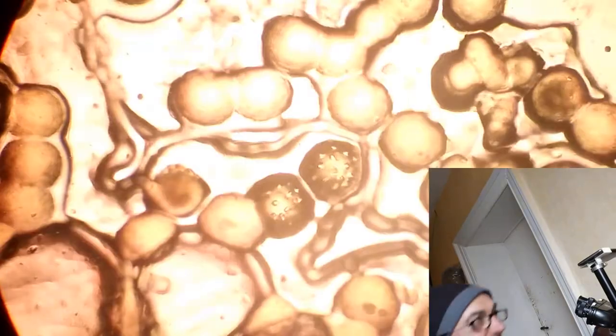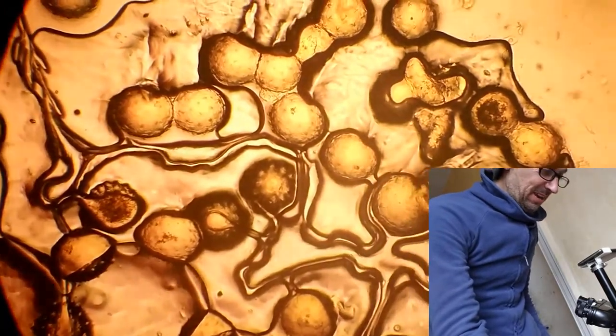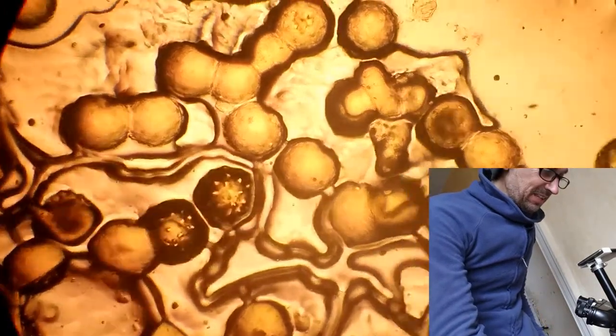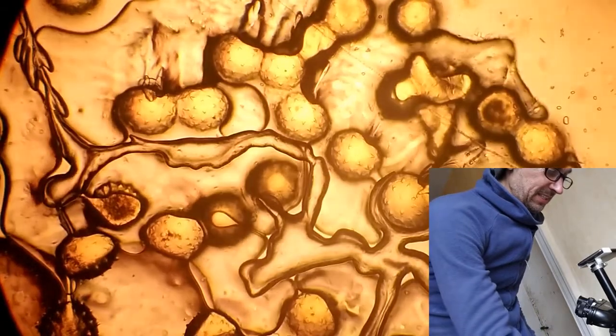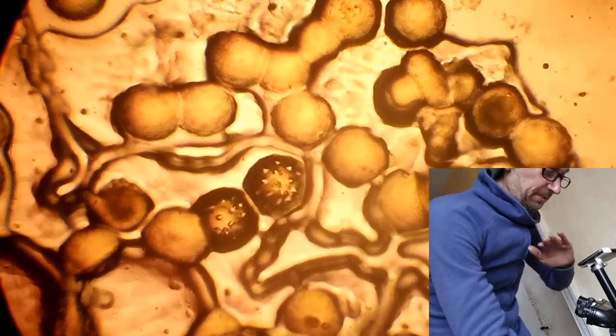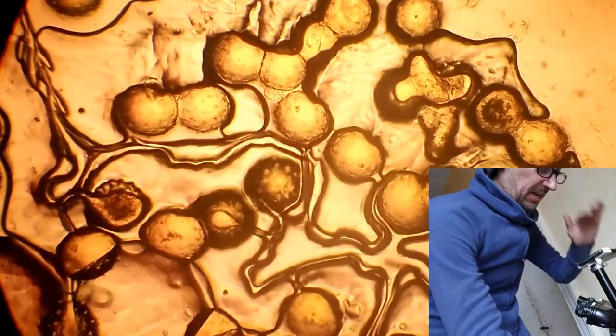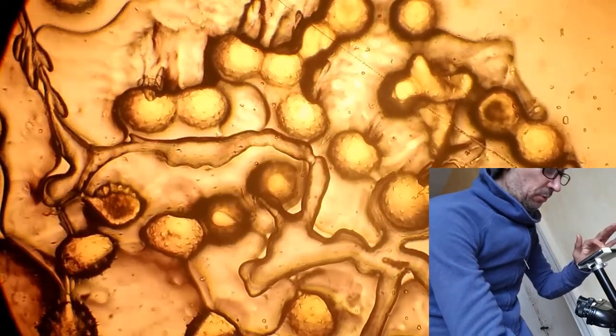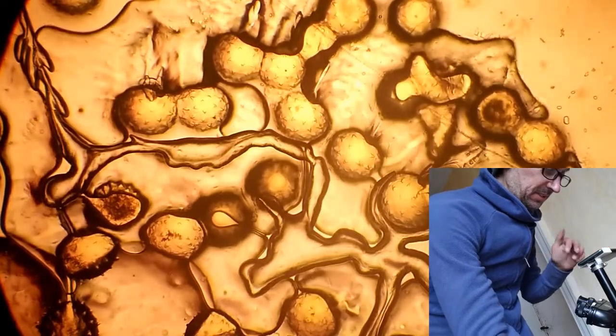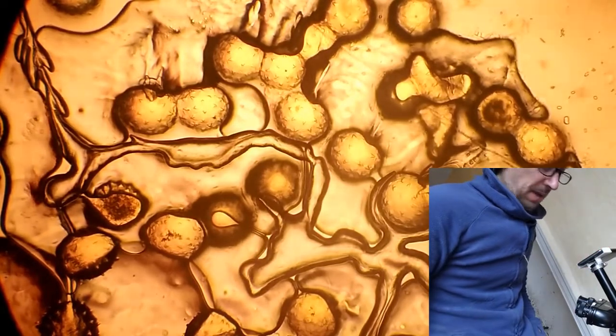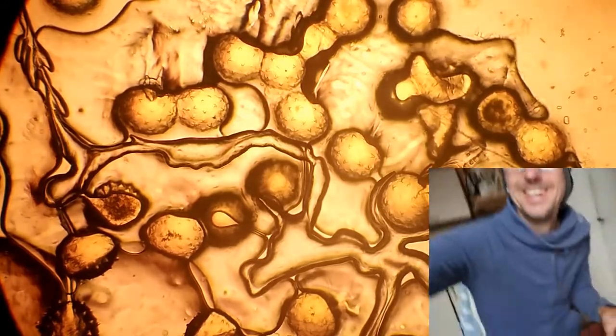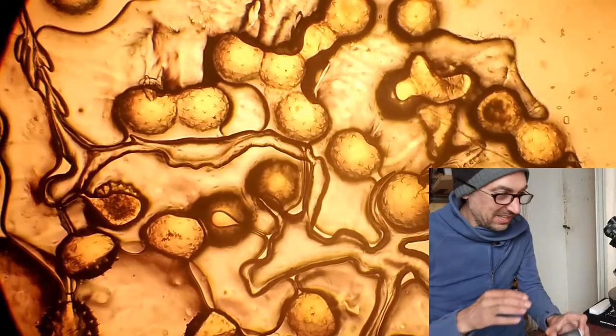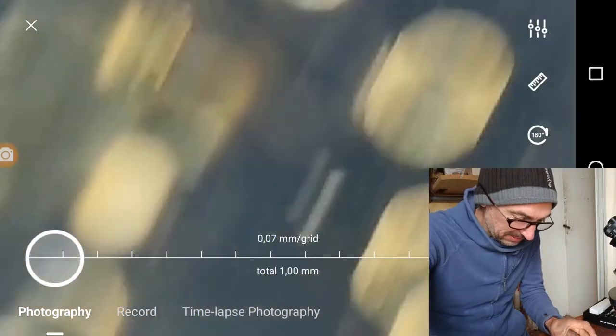Back to 10x - this looks rather like what the tiny scope does. Here you can focus different layers. If I change the height of focus, other pollen grains come into view. Every ball here has these spikes, whereas with the tiny scope it was not so clear.